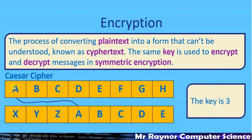Probably the most famous symmetric encryption method is the Caesar cipher. Caesar apparently used a key of three — for example, the letter A is converted to X, shifted along three places on the alphabet. The same applies to every letter, and having filled out the full alphabet you come back and put the last few letters at the start. The same key is used to decrypt the message.